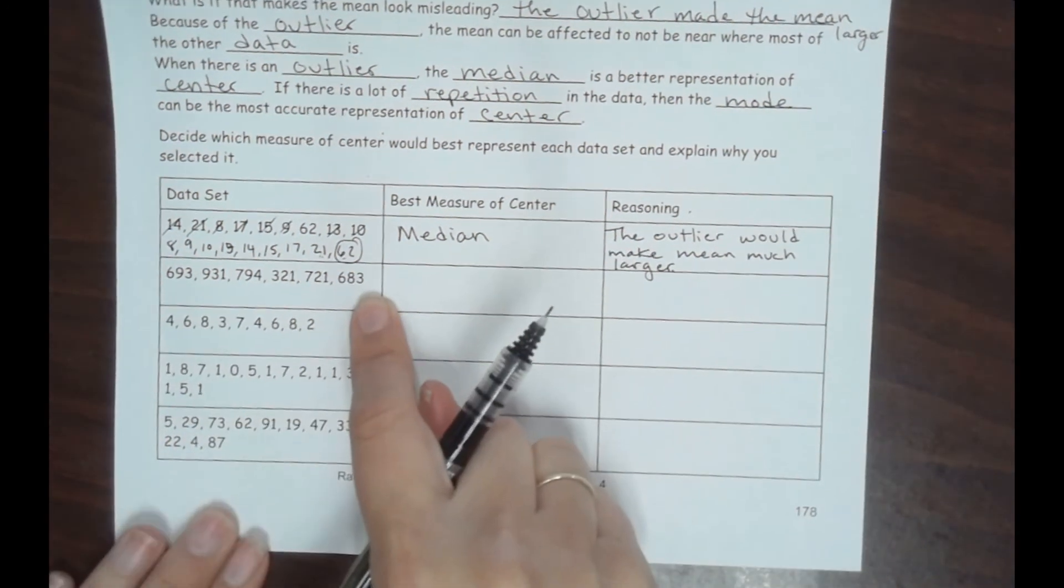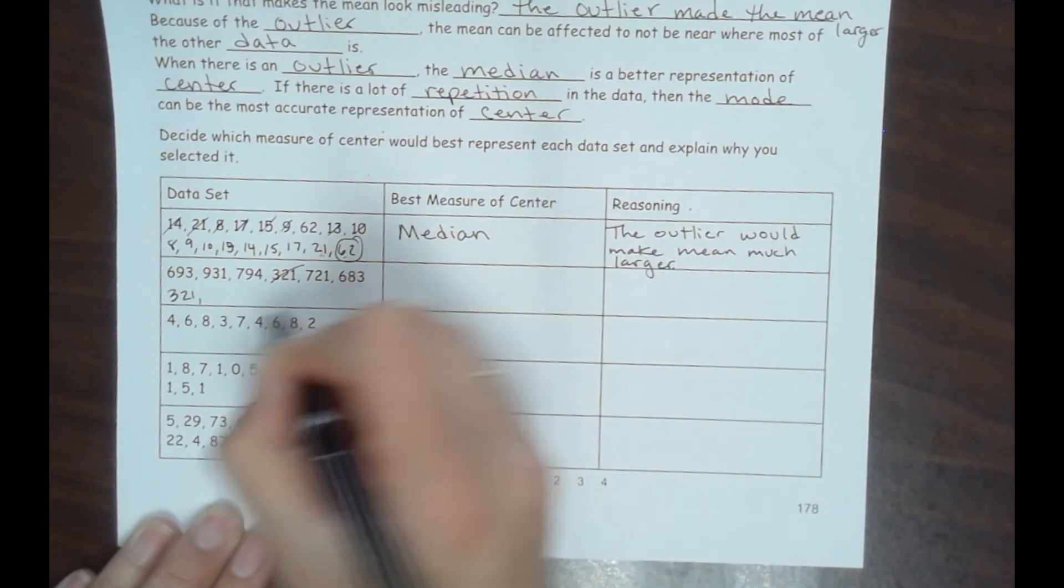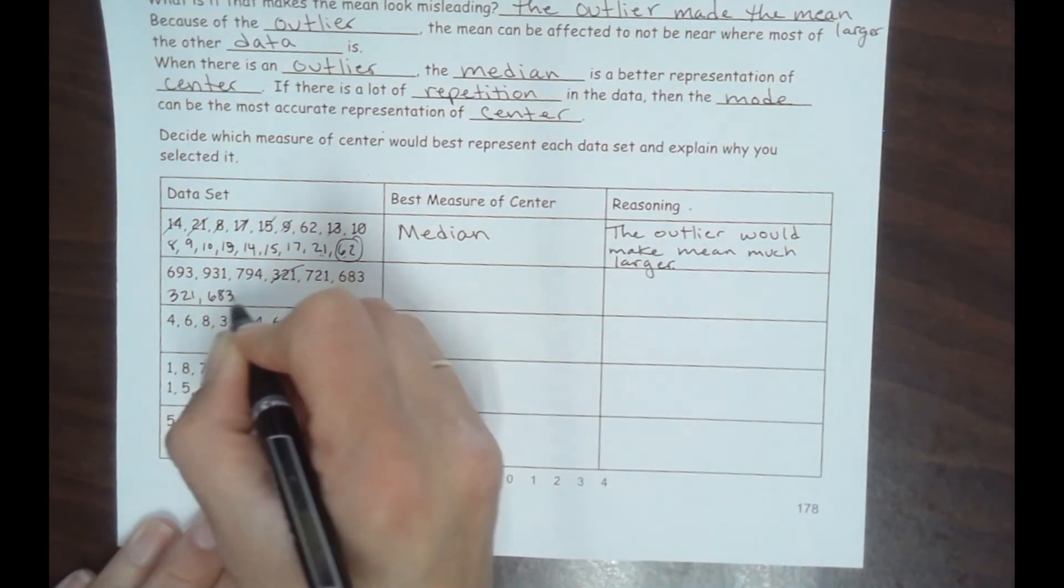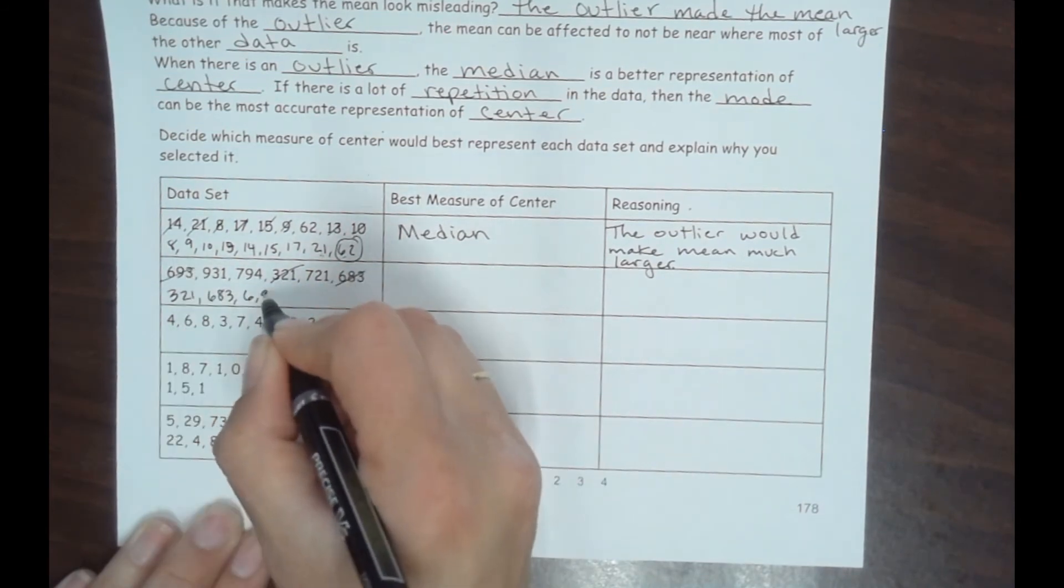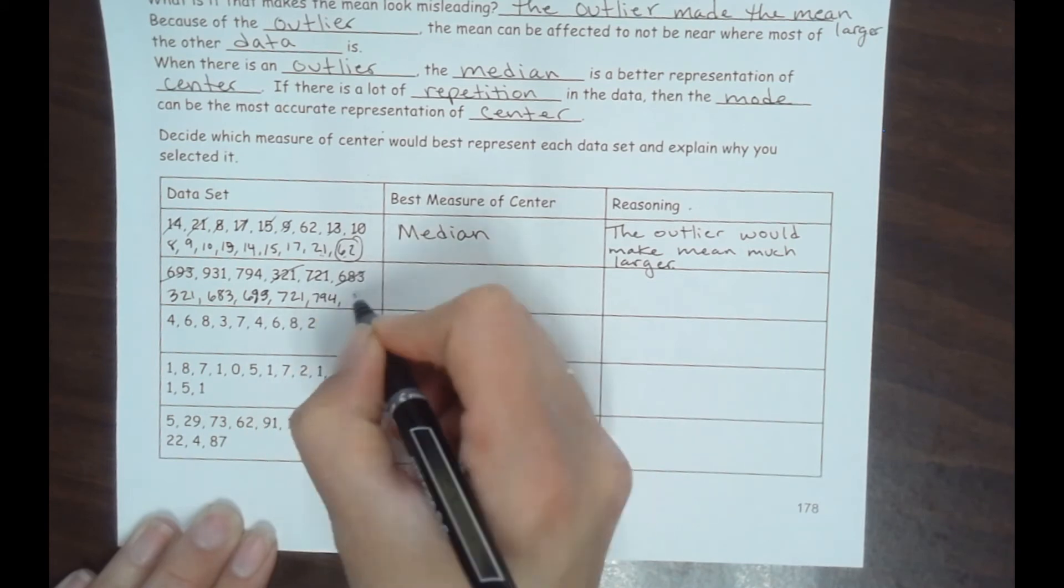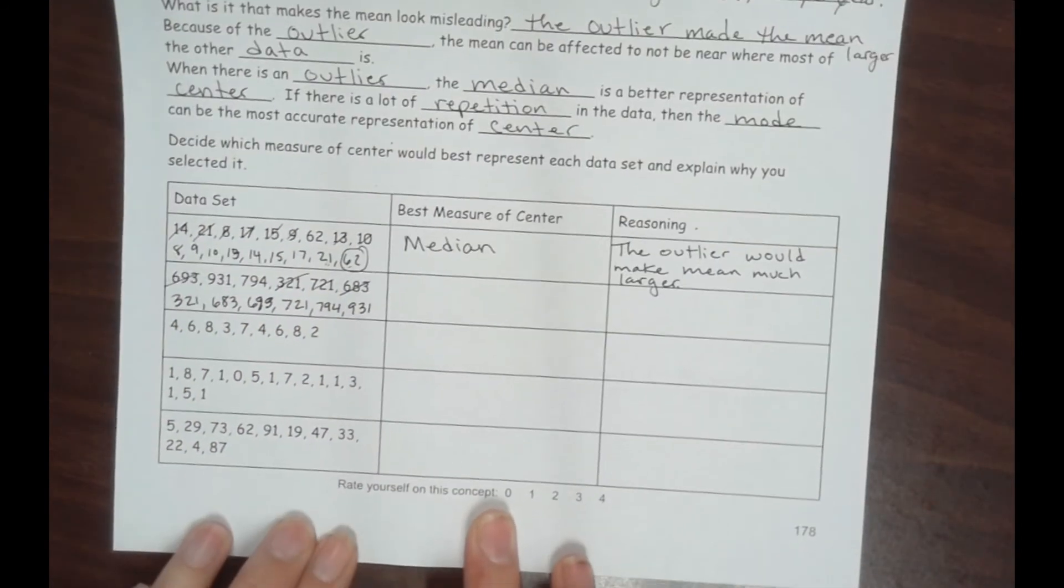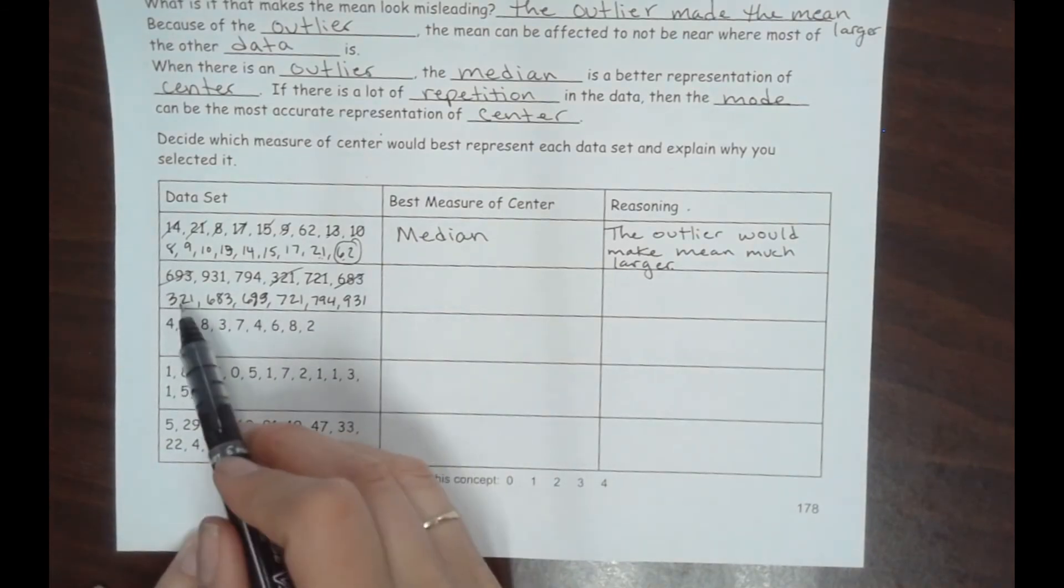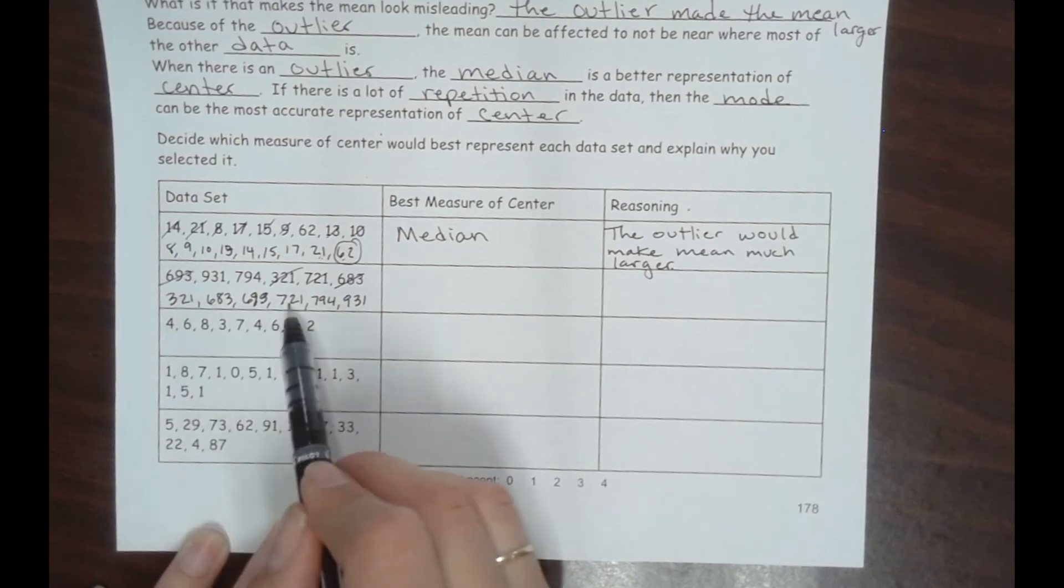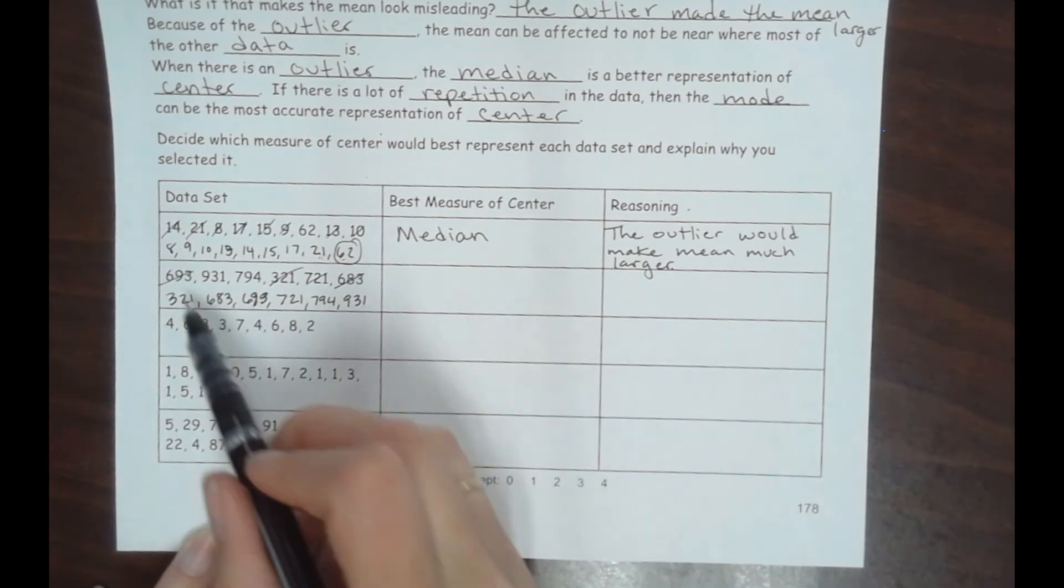Okay, let's look at this data set. Our lowest one here is 321, next lowest looks like 683, 693, 721, 794, and 931. Okay, when they're organized, it's a lot easier to recognize an outlier. So look at this. Between 321 and 683, that's a jump of over 300. Here there's a jump of 10, a jump of 30, a jump of 70, and this one jumps up about 100. But because of that, this one right here is going to be an outlier.